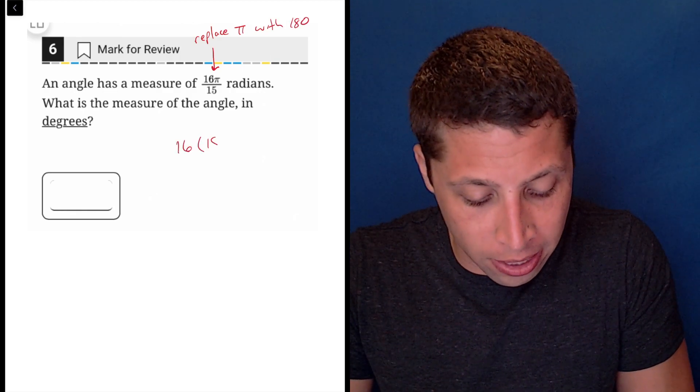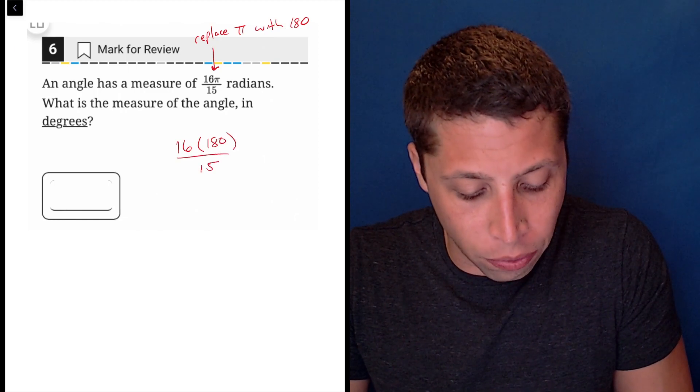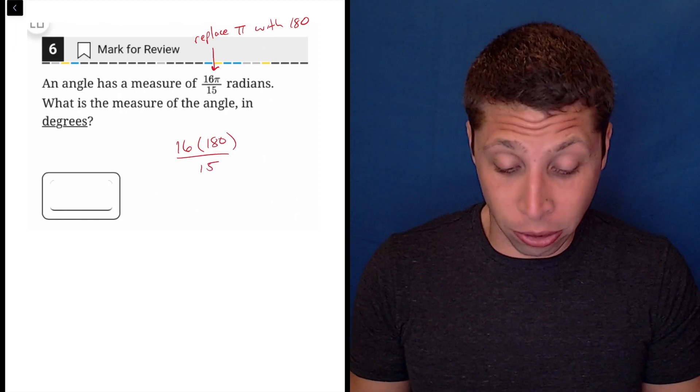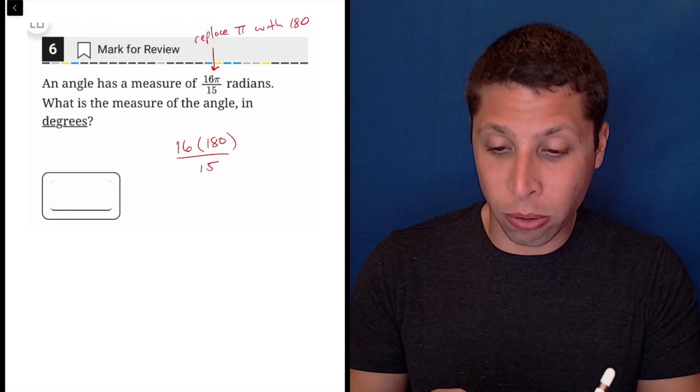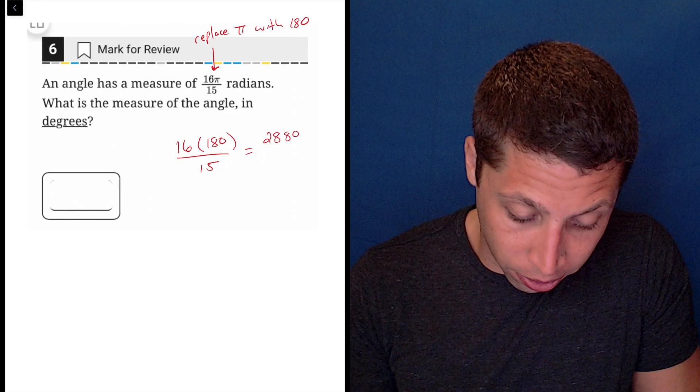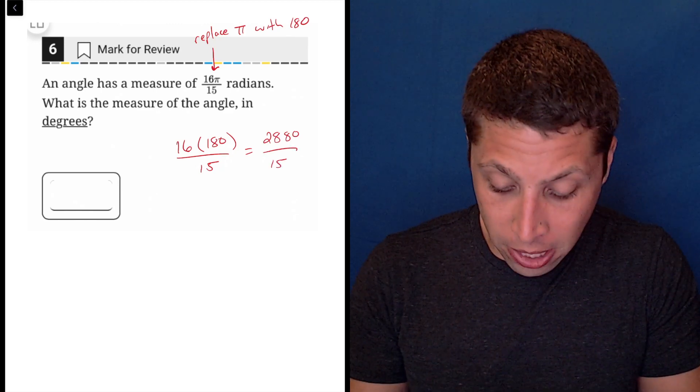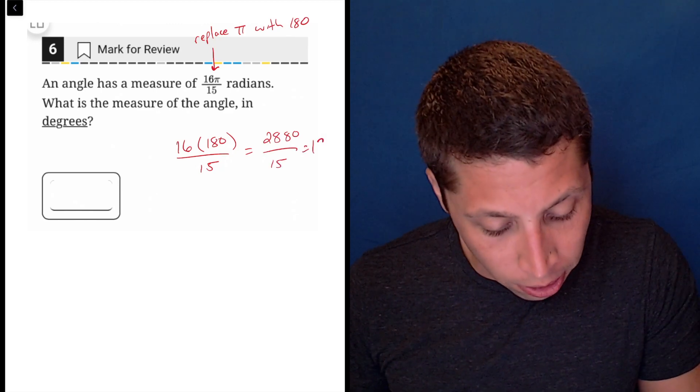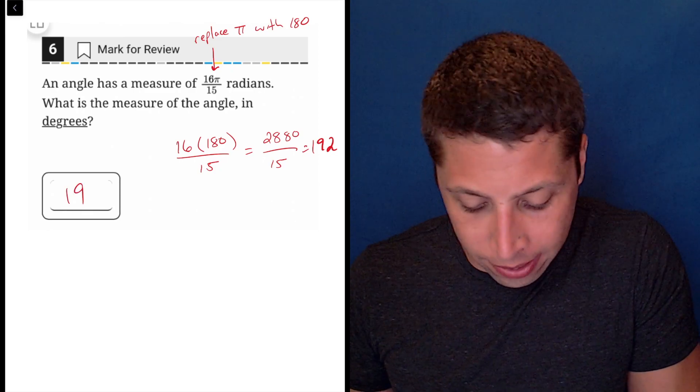So in this case, that would be 16 times 180 over 15. We have a calculator, so none of this arithmetic is going to be difficult. So 16 times 180 is 2,880 divided by 15 is 192, and that is the answer.